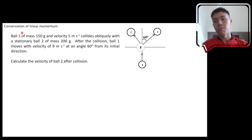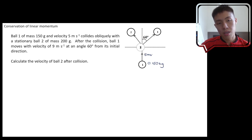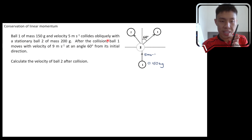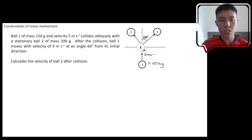Let's try to solve this problem. Ball 1 has a mass of 150 grams, which is 0.150 kg, and is moving at 5 meters per second. It collides obliquely — obliquely means at a certain angle, slightly deviated from the center — and hits ball 2. Ball 2 is stationary, meaning it was initially at rest.